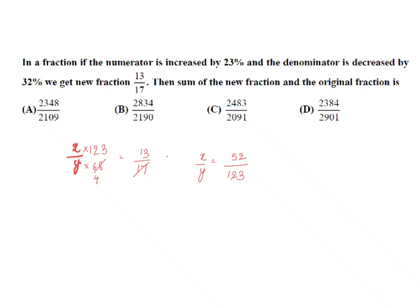Sum of the new fraction and the original fraction: you have 52 by 123 plus 13 by 17. You can take 13 common and do it, or else try to figure out your denominator. Your denominator will be a multiple of 123 and 17. Therefore, just simply multiply 123 into 17. 17 times 3 is 51, 17 times 2 is 34 plus 5 is 39. So 17 plus 3 equals 2091.